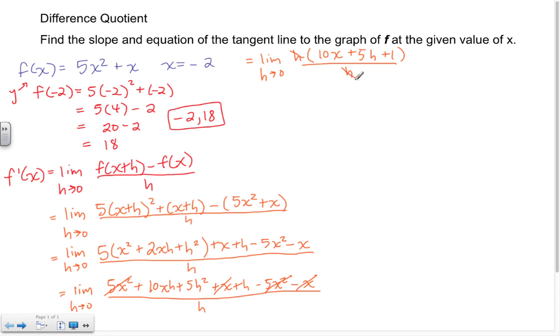I see I have a common factor of h in both my numerator and denominator, so that cancels and I'm left with the limit as h approaches 0 of 10x plus 5h plus 1. Now it's safe to do a straight substitution where h is 0, so this here is equal to 10x plus 5 times 0 plus 1.